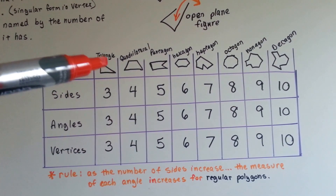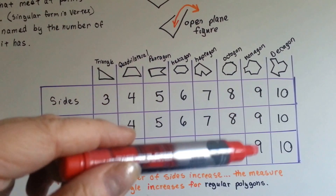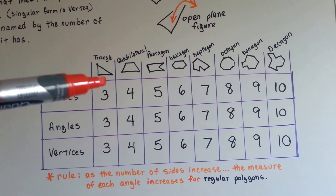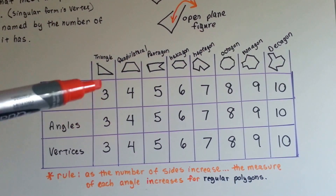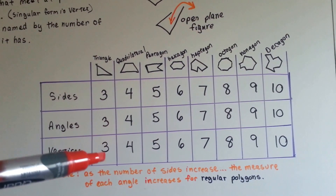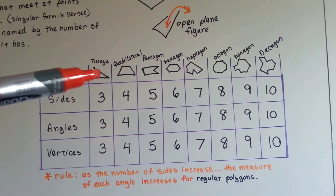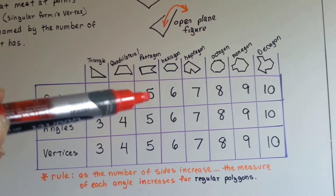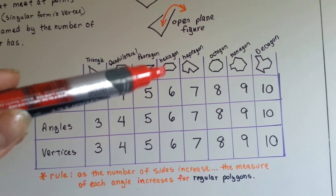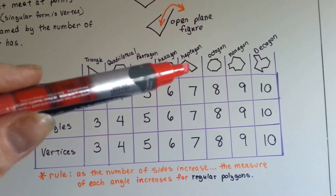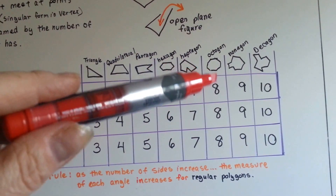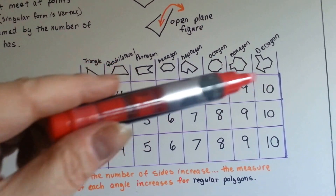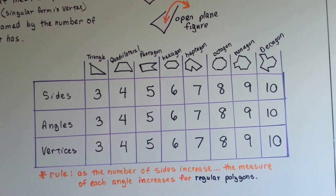If you notice, they all match. Whatever the number of sides is, that is the number of angles and vertices they have. Triangle is 3, quadrilateral is 4, pentagon is 5, hexagon is 6, heptagon is 7, octagon is 8, nonagon is 9, and decagon is 10.